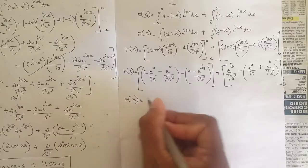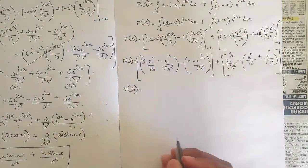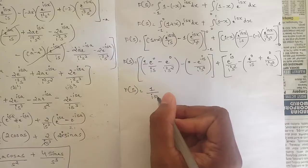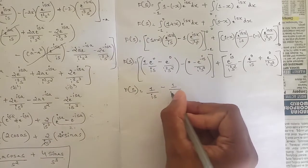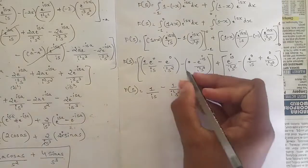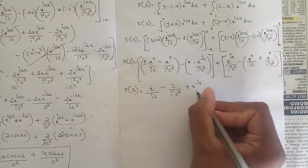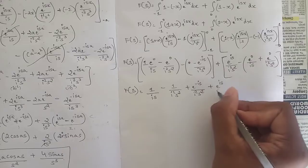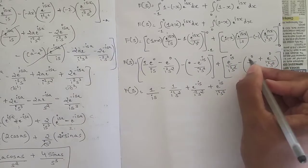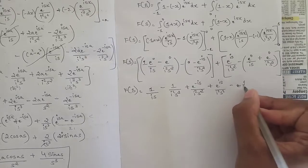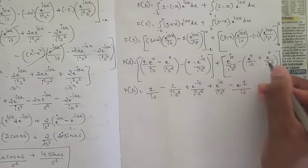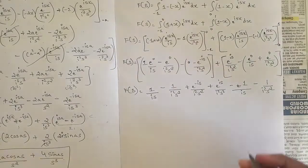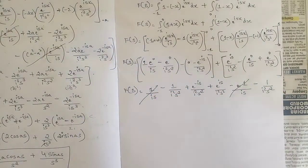Removing brackets and writing in a single line: e^0 = 1, so we have 1/is minus 1/(i²s²), plus e^(-is)/(i²s²), plus e^(is)/(i²s²), minus 1/is, minus 1/(i²s²). The two 1/is terms cancel each other out.